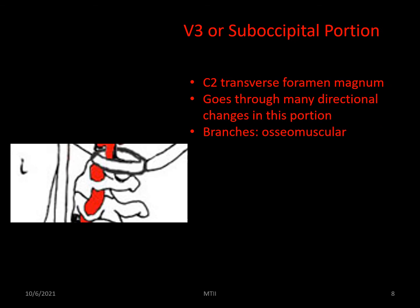V3, the suboccipital portion, begins at the transverse process of C2 and ends at the foramen magnum. The artery takes about three right-angle turns in its passage, passing beyond the arch of the atlas in a groove in which it is held in place by a restraining ligament. This seems to be the area where most injuries occur. Branches are the osteomuscular branch, which supplies the atlas and axis vertebrae and the posterior suboccipital muscles.